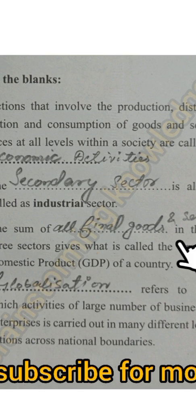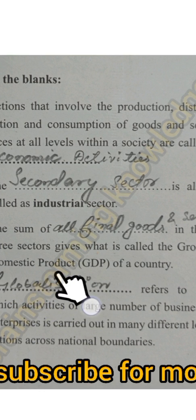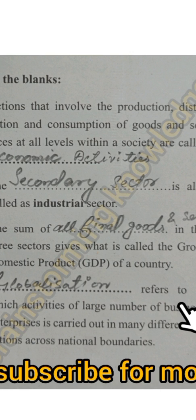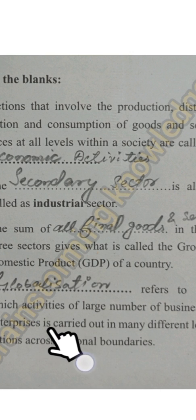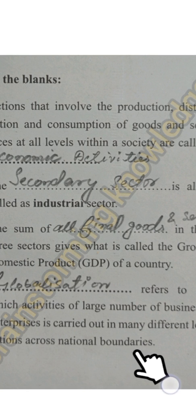Third, the sum of all final goods and services in the three sectors gives what is called the Gross Domestic Product (GDP) of a country. Fourth, globalization refers to a situation in which activities of a large number of business enterprises are carried out in many different locations across national boundaries.